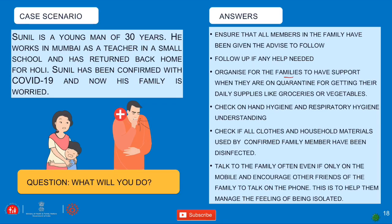Organize family support during quarantine for getting daily supplies like groceries and vegetables. Hand hygiene and respiratory hygiene are important. All clothes and household materials used by Sunil must be disinfected every day. Talk to the family often, even only by mobile, and encourage friends and relatives to call. This helps them manage feelings of isolation. Healthcare workers should also contact relatives for moral support.